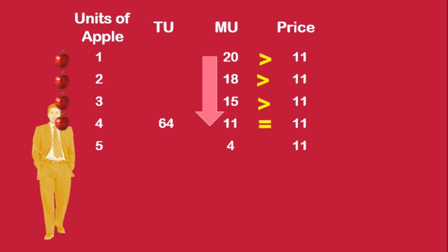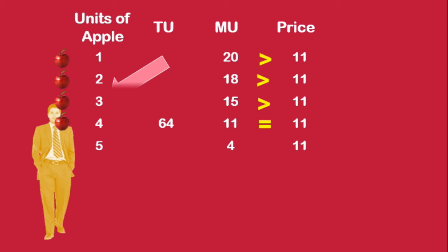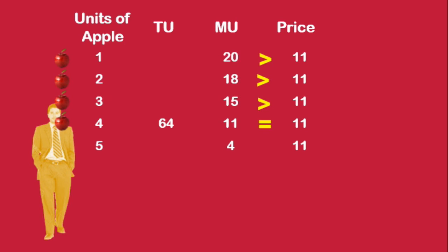If he consumes less or more than this equilibrium quantity, he cannot be in equilibrium. Suppose he stops with the third apple, which is one less than the equilibrium quantity. Its marginal utility is 15 units, which is greater than the price. He cannot be in equilibrium; there is scope for him to maximize his total utility by consuming more.